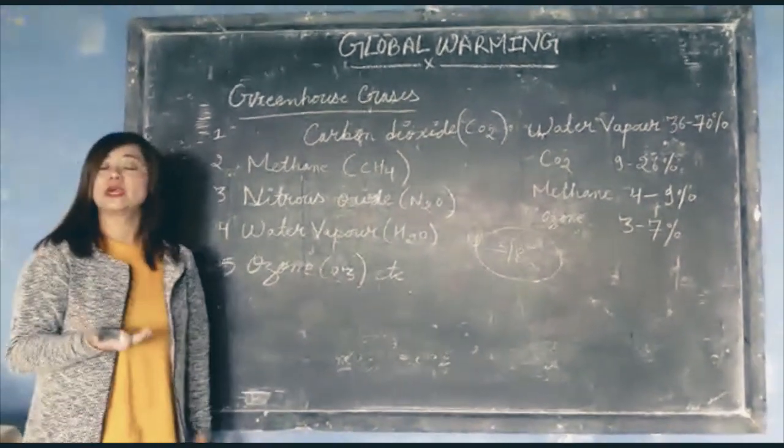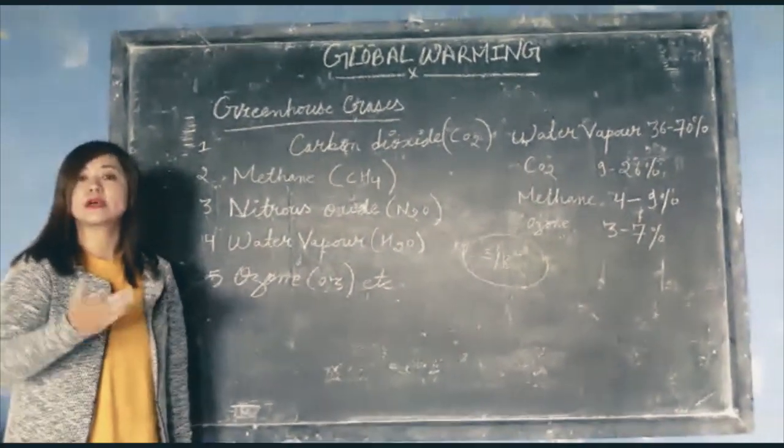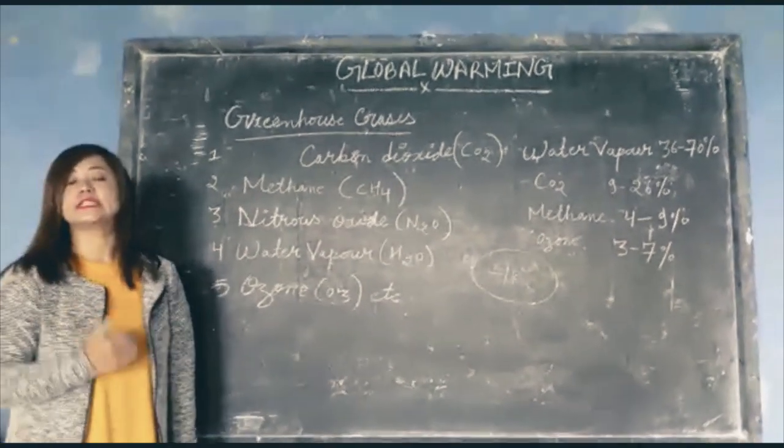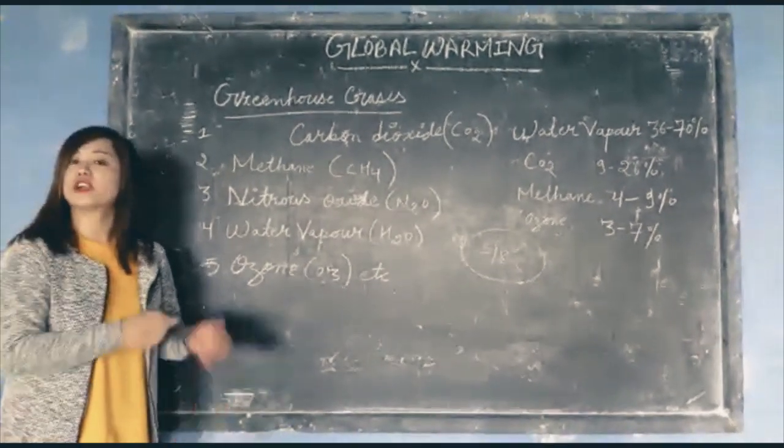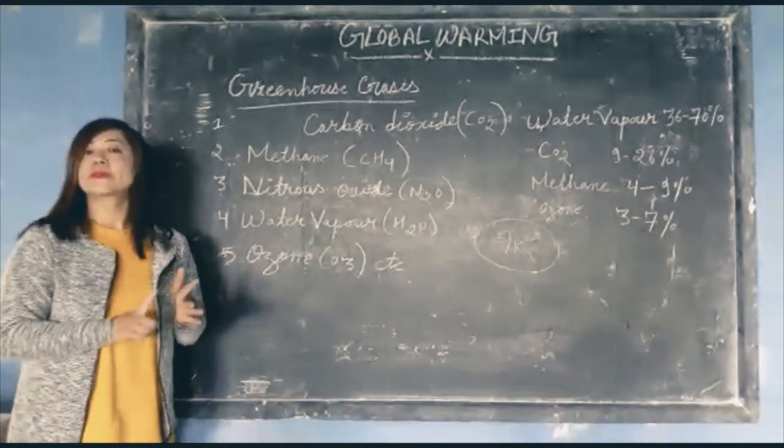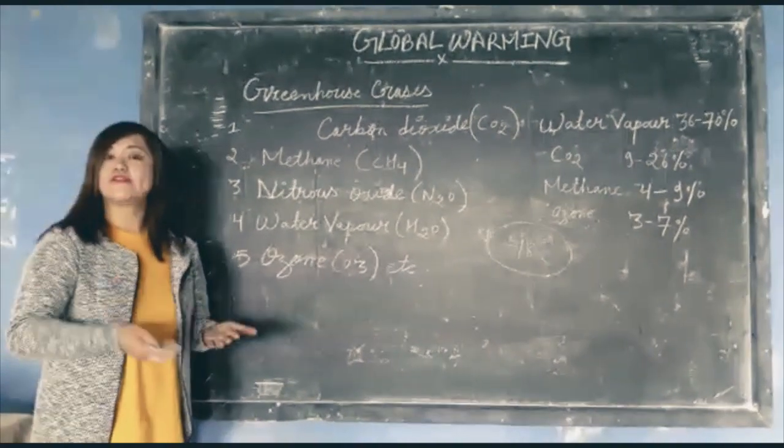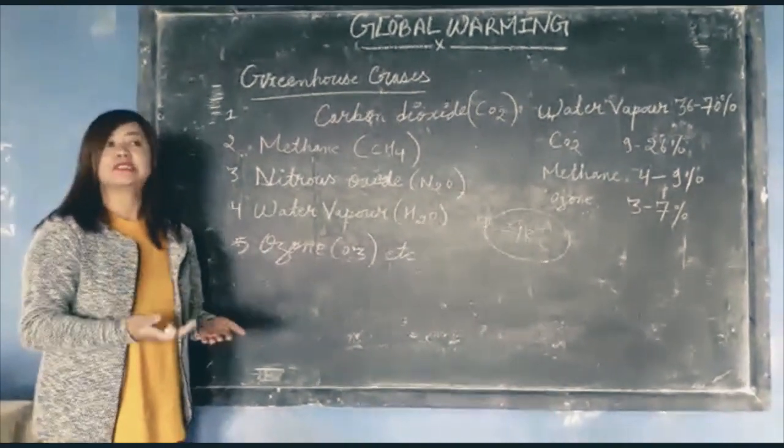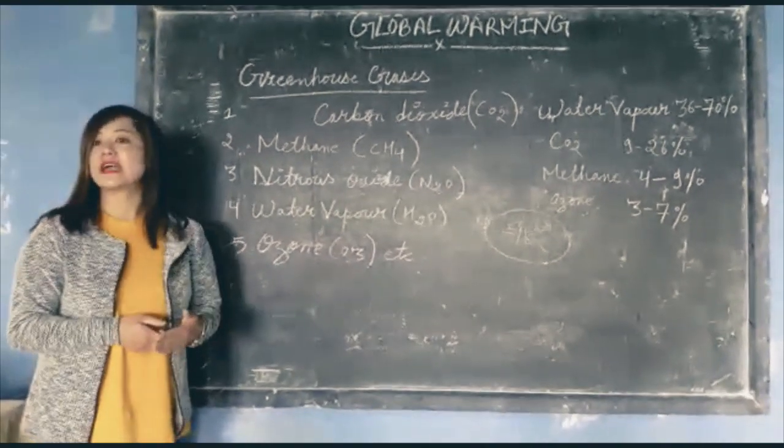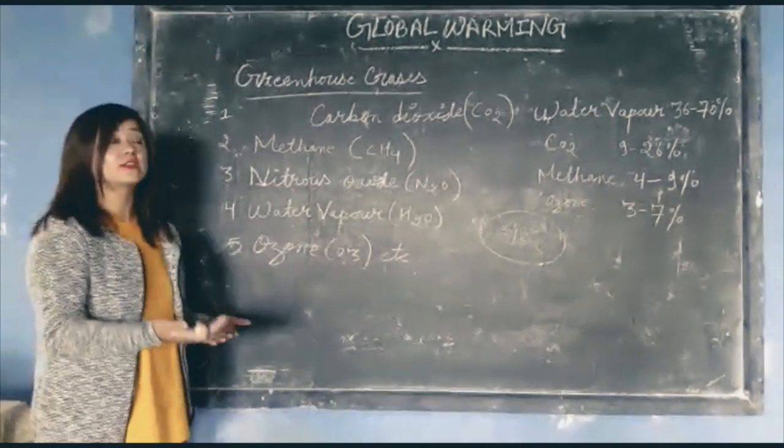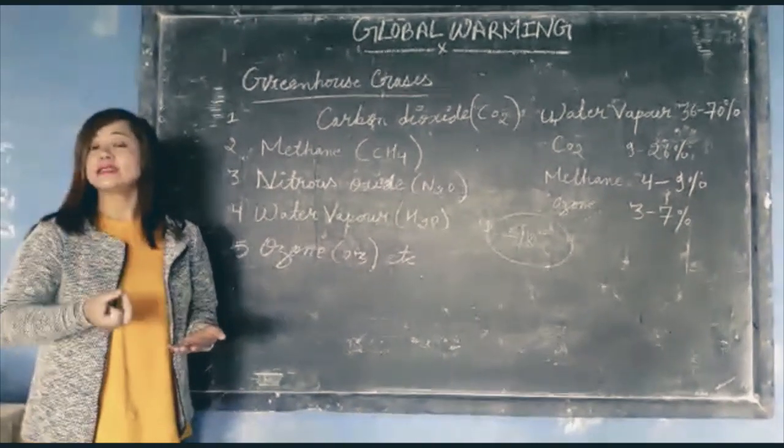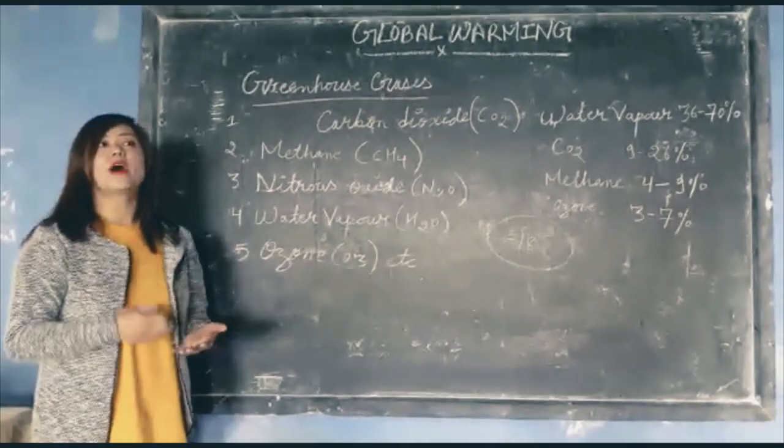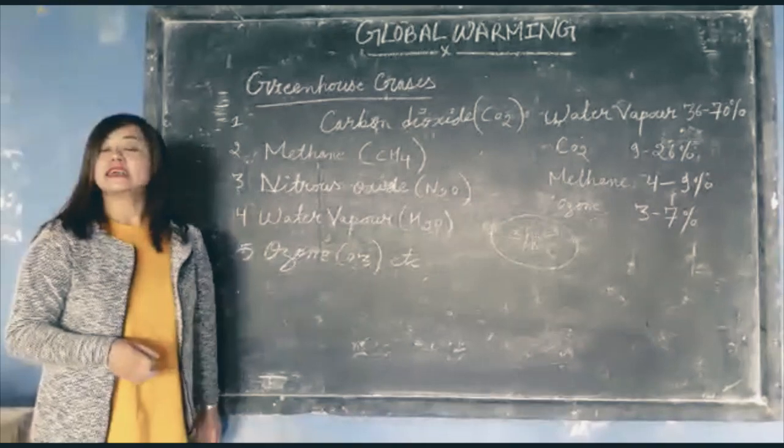But nowadays, the amount of greenhouse gases is increasing due to human activities like burning of fossil fuels—coal, petroleum, natural gas. Transportation vehicles are emitting harmful and toxic gases. Industries and factories are also emitting harmful and toxic gases. This is increasing the amount of greenhouse gases.